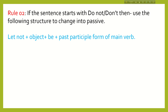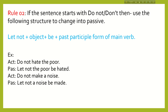Rule 2: If you find a sentence starting with 'do not' or 'don't', it is also an imperative sentence. You have to use the following structure to change it into passive voice: Let not + object + be + past participle form of verb. For example, 'Don't hate the poor.' The sentence starts with 'do not', so: Let not the poor be hated.